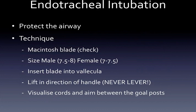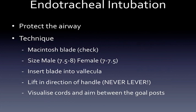Once you can visualize the vocal cords, aim your endotracheal tube through them. Confirm correct placement by measuring end-tidal CO2 — the gold standard — and by looking for misting of the tube, good chest rise and fall with bag ventilation, and equal breath sounds on auscultation. Also auscultate over the epigastrium — air bubbles may indicate esophageal placement.